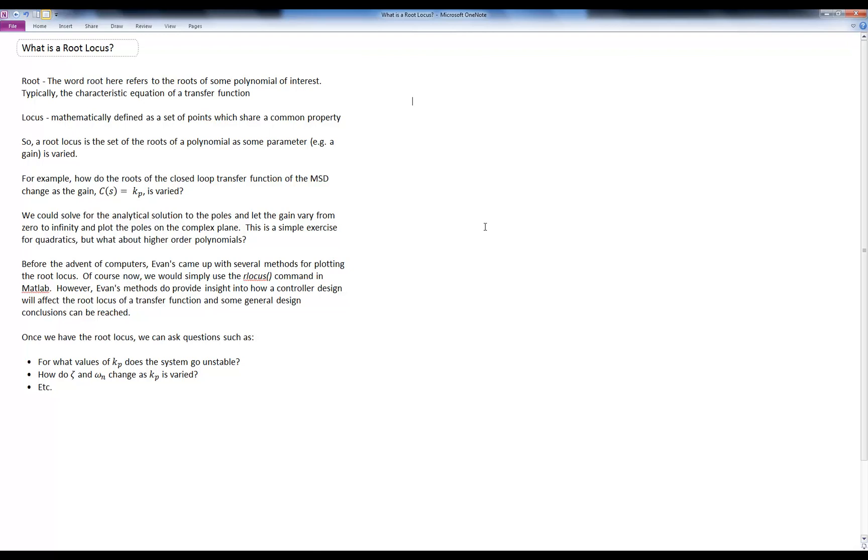Locus is mathematically defined as a set of points which share a common property. So a root locus is the set of all the roots of a polynomial as some parameter, for example a gain in the system, is varied.